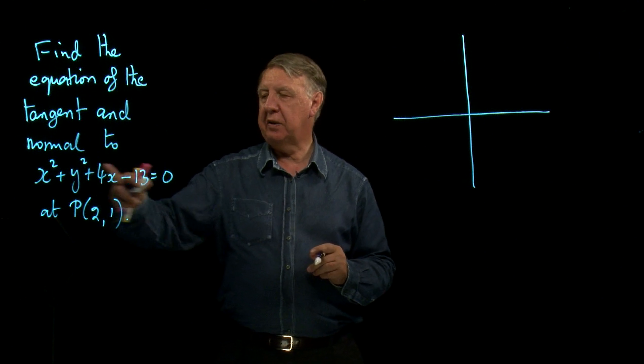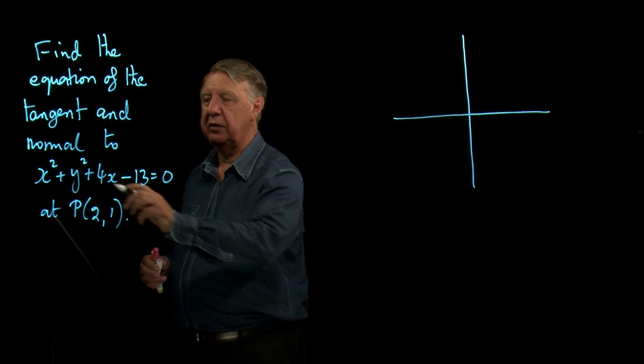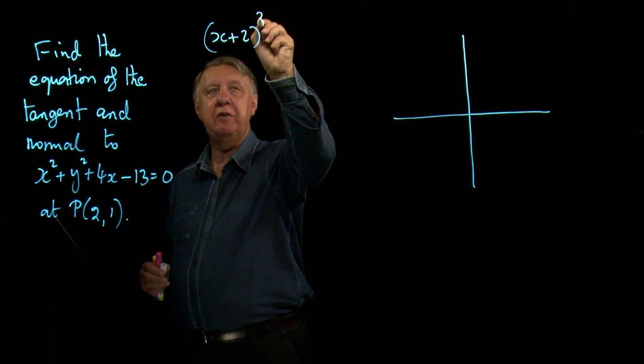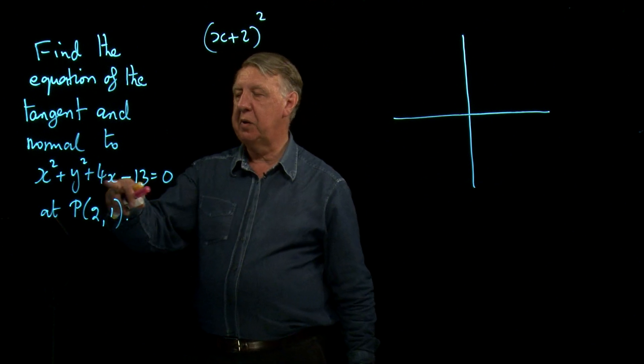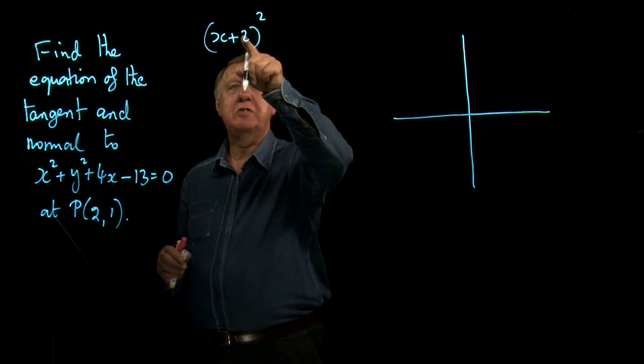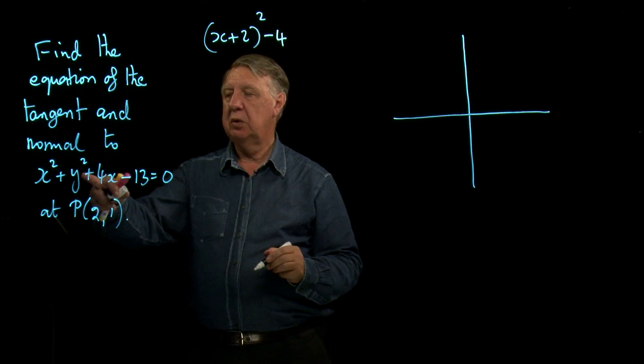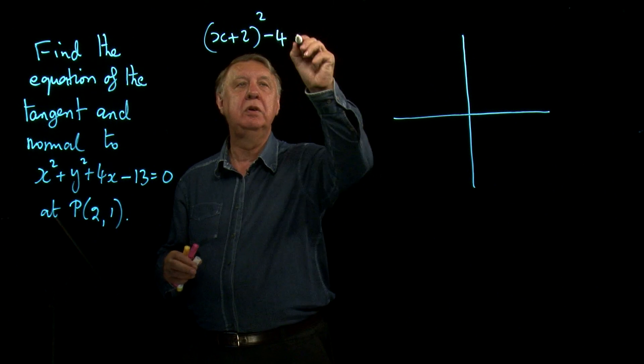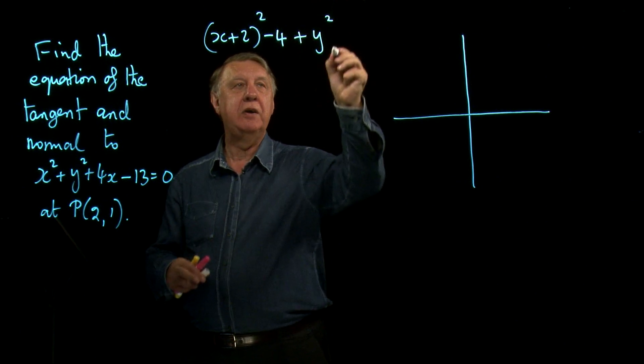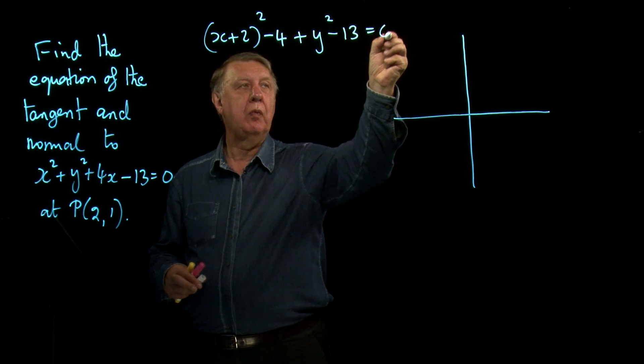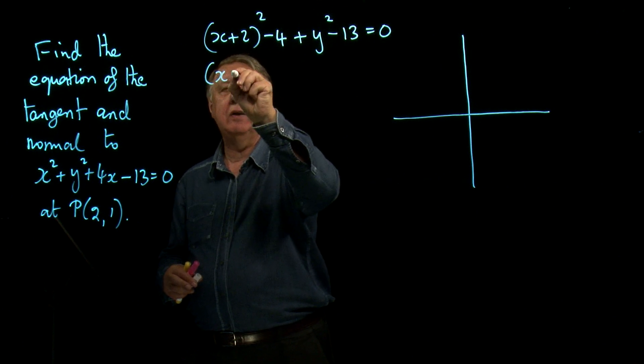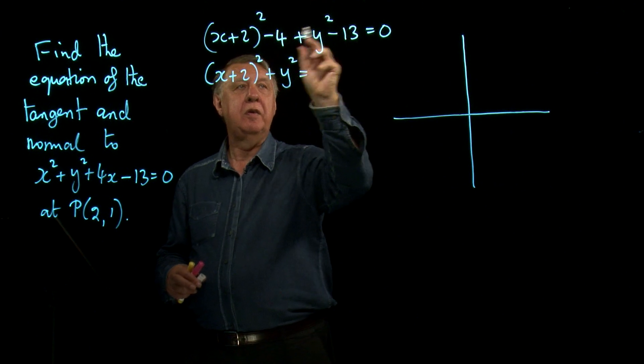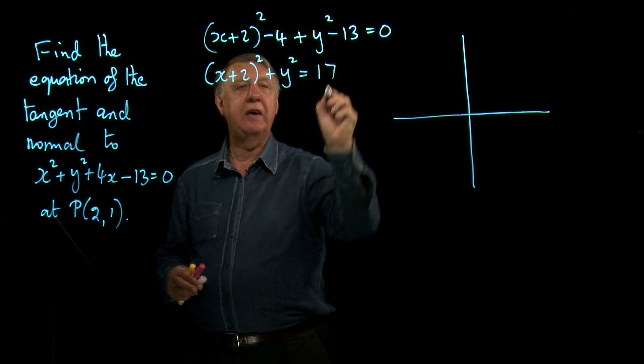If we take our basic equation, we'll complete the square on that. So we'll have x plus 2 all squared. That gives me the 4x. Remember you halved this number, square it and take it away, so that's 4. Y doesn't have anything with it, the y squared is on its own, so that stays as y squared minus 13. In the helpful version of the circle, those two make 17 and that goes over there.